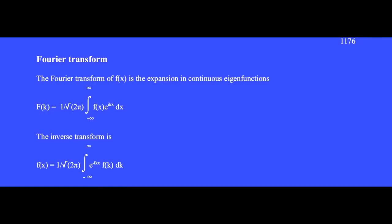When the discrete sum over index n becomes continuous, then we have the Fourier transform.